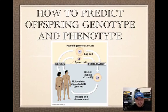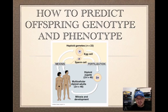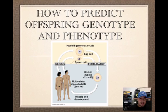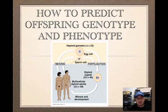Hello students. Today we're going to learn how to predict offspring genotype and phenotype. We're going to find out what the combinations are of the developing child and also what its possible physical features — in other words, what its phenotype is going to be.